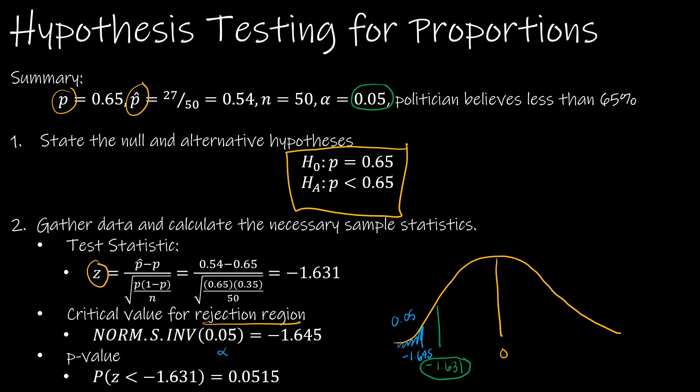We're also looking at finding the p-value, going to the left because that is the direction of our alternative hypothesis. We're going to the left of negative 1.631, which in Excel is norm s dist of negative 1.631, true or 1. That gives us 0.0515, which is ever so slightly greater than alpha (0.05), and so that would tell us to fail to reject.